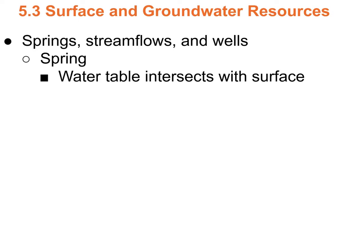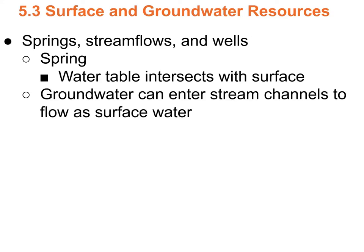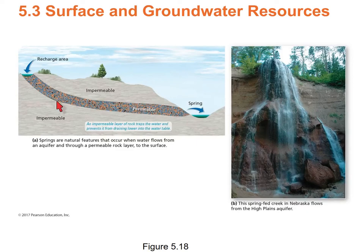Springs happen when the water table is higher than the surface. Groundwater can enter stream channels to flow as surface water, and streams can be recharge areas. Artesian wells are similar to springs — the water table is higher than the surface, and the water comes out under its own pressure without pumping. Here you can see a confined aquifer with a spring, and under slightly different conditions, you'd get an artesian well.